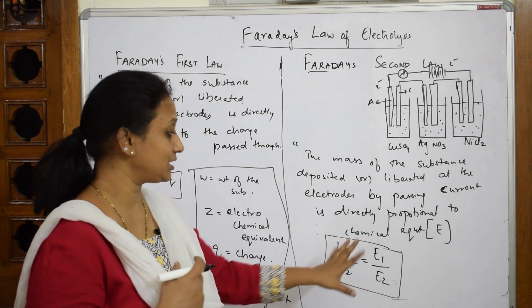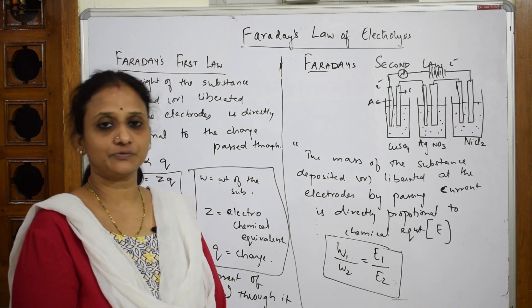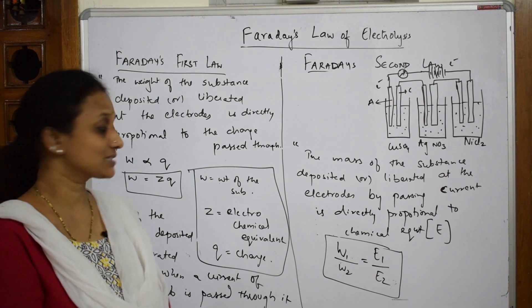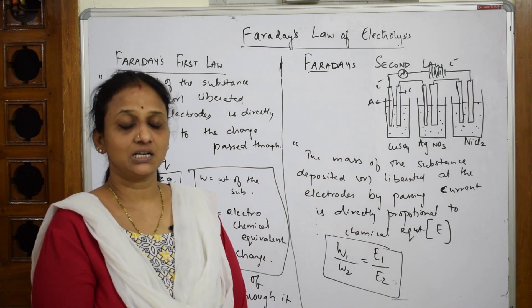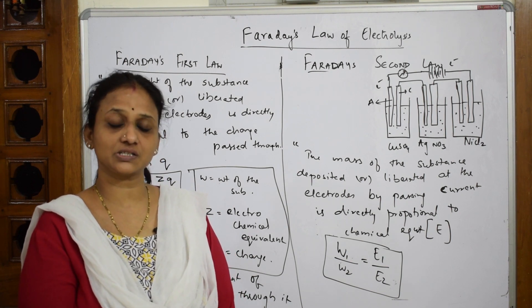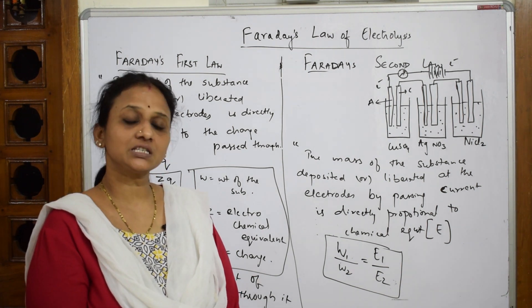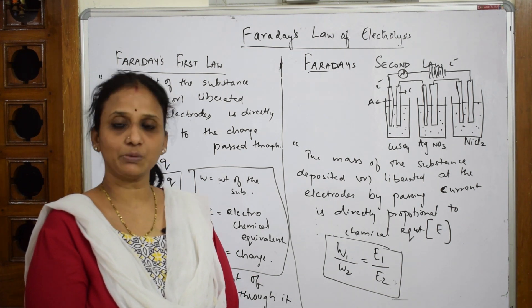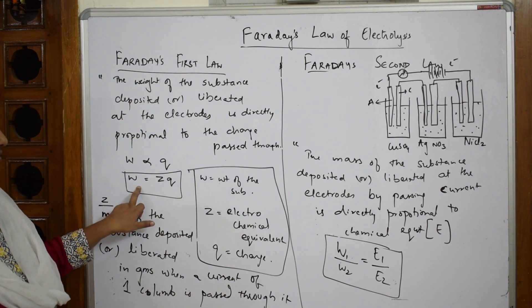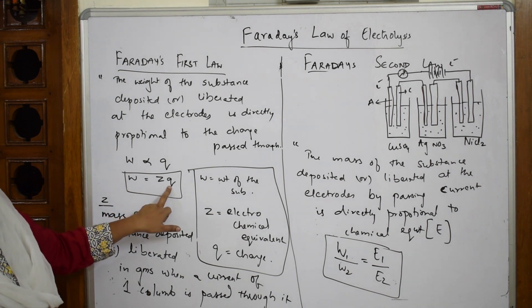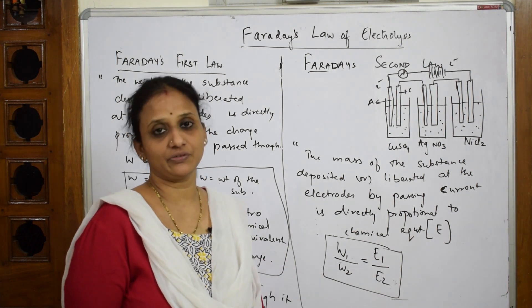When doing numericals you will clearly understand the concept. Remember: whenever you supply one Faraday of electricity — that is 96,500 coulombs — you are speaking in terms of one mole of electrons. So to summarize: the first law gives W = zQ, relating weight and quantity of current; the second law relates weight to chemical equivalents.